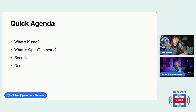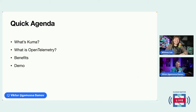A brief agenda for today's presentation: in the first part, I'll answer what's Kuma and how it's different from Istio. Then we'll cover what OpenTelemetry is and its benefits. And hopefully, as Whitney mentioned at the very beginning, we'll build some things and break some things. It's going to be exciting.